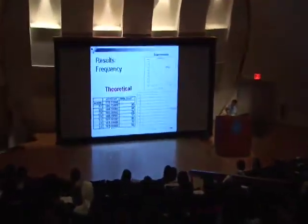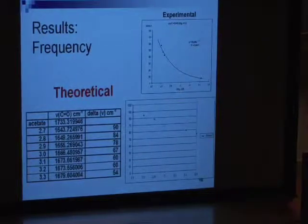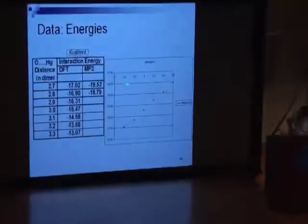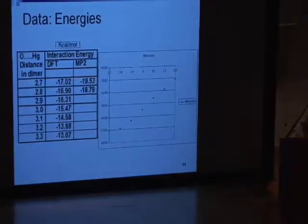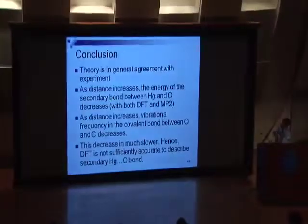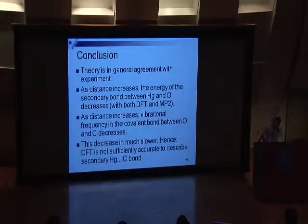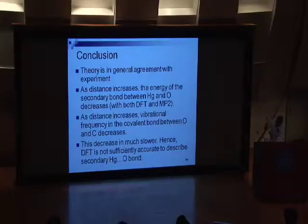This is the graph I was able to construct with the data I retrieved. As you can see, comparing this graph to that graph — this graph is more linear, you can draw a straight line and almost touch all the dots. But for the other one, if you drew a straight line it would only touch maybe two dots. The trend is similar: as distance increases there is a drop in frequency, but the experimental one is more exponential. As the distance increased, the energy actually decreased. The theory is in general agreement with the experiment — as the experimental data showed, distance increase leads to frequency decrease, and I did get that theoretically, but it was more linear.